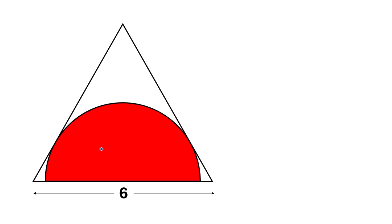Hello everyone. In this video I am going to solve an interesting geometry problem. We have an equilateral triangle with a side length of 6 units, and there is a semicircle inside it. The diameter of this semicircle lies on one side of the triangle and touches the other two sides.